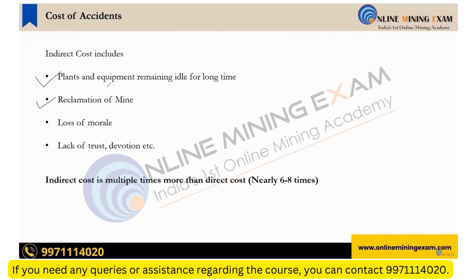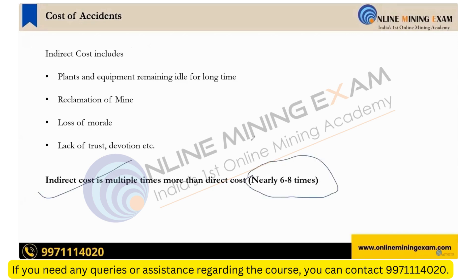Loss of morale is also an indirect cost — motivation is reduced, trust is reduced, and devotion is reduced. All these things are called indirect costs. It has been derived that indirect cost is much, much higher than direct costs — nearly six to eight times in the mining industry, though it can vary up to 20 or 25 times. So indirect cost is multiple times as compared to direct cost.